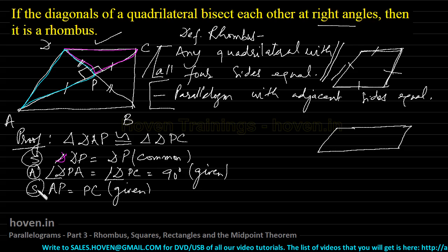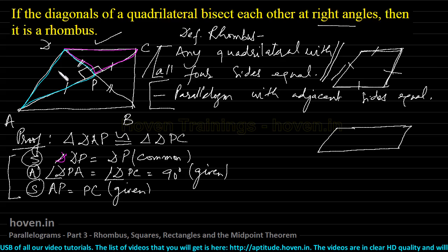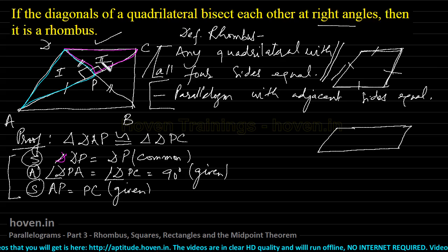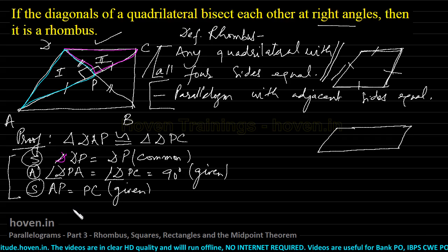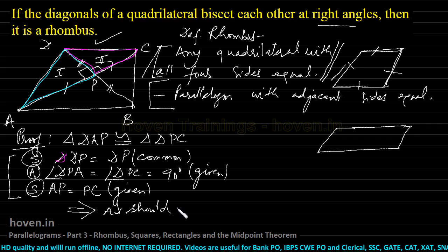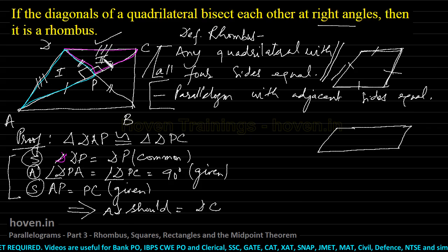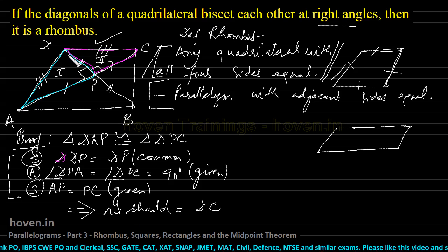By the SAS criterion — this side, the included angle, and the other side — these two triangles are congruent. When these two triangles are congruent, the third pair of sides must be equal, which implies AD = DC. We have now proved that if the diagonals are perpendicular bisectors, then this side equals this side.